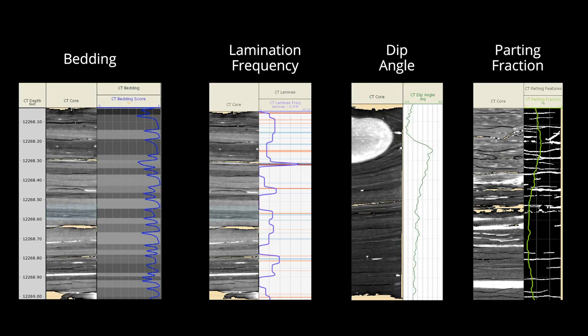Once the data has been imported and cleaned, automated processing pipelines can be run to extract features that can be used by the geologist for core description. Bedding curves, lamination frequency, dip angle, and fractures can all be automatically detected, significantly reducing the time it takes for the geologist to do core description.